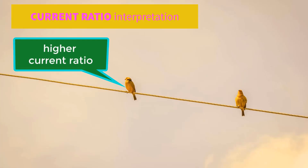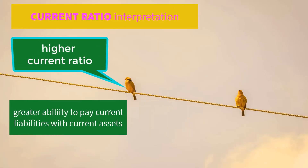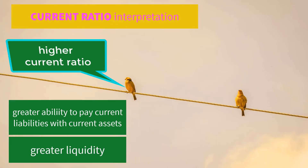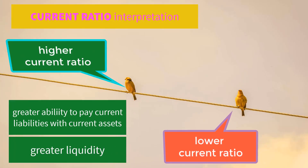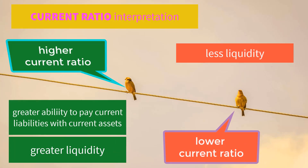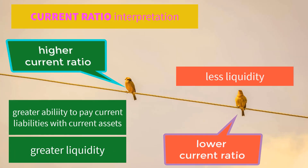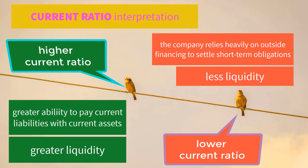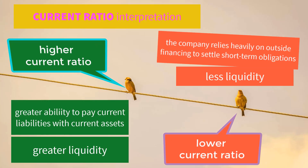A higher ratio indicates greater ability to pay current liabilities with current assets, meaning greater liquidity. A lower current ratio indicates less liquidity, implying that the firm relies heavily on outside financing to settle short-term obligations.